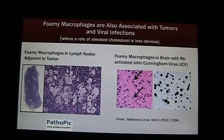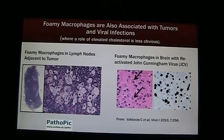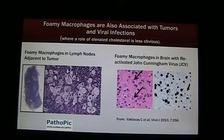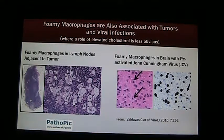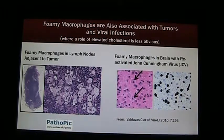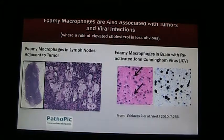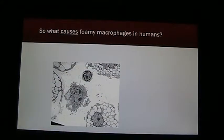Foaming macrophages have been described in association with tumors and viral infections. On the left we see a lymph node adjacent to a tumor where we can clearly see these foaming macrophages. And in brain sections with reactivated John Cunningham virus, given on the right. So what causes foaming macrophages in humans?